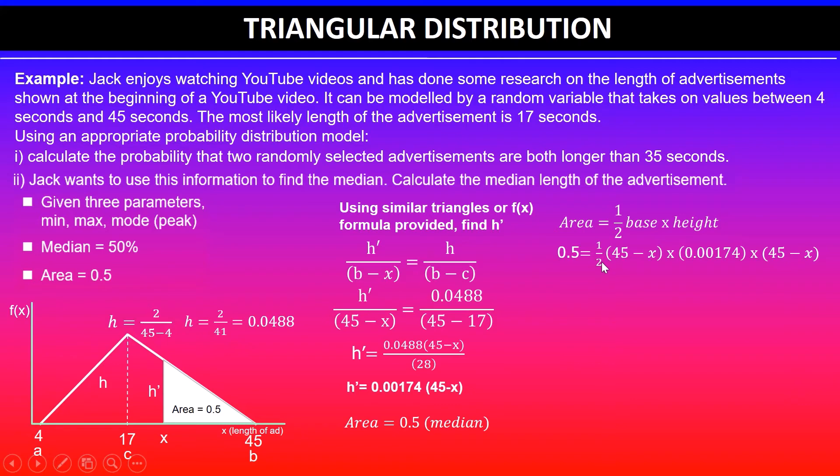Now I can get rid of this half by multiplying both sides by 2. Very easy to do that. So 0.5 times 2 will give you 1. So 1 is equal to 45 minus x times 0.00174.